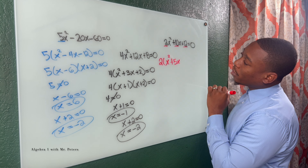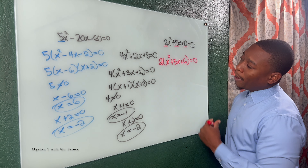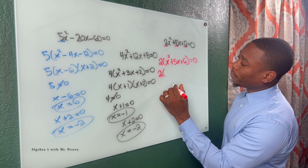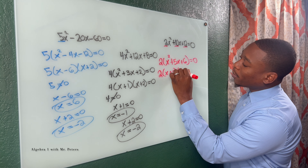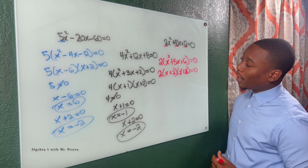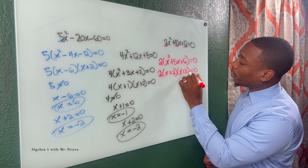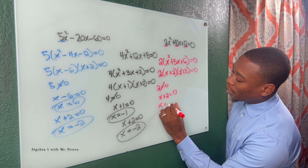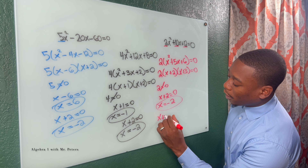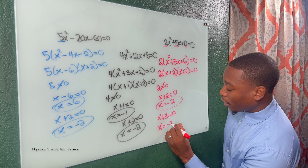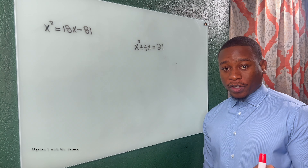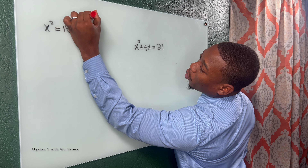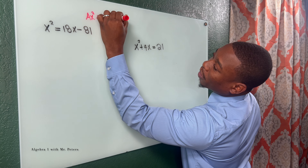For our last GCF example, we can divide everything by two, giving a lead coefficient of one. Pulling out two leaves x squared plus five x plus six equals zero. Students, don't focus on the two — only focus on what's inside and factor that. We have x plus two times x plus three, and when we multiply it gives six, when we add it gives five. Setting two equal to zero is not true, so we throw it out. x plus two equals zero gives x equals negative two, and x plus three equals zero gives x equals negative three.